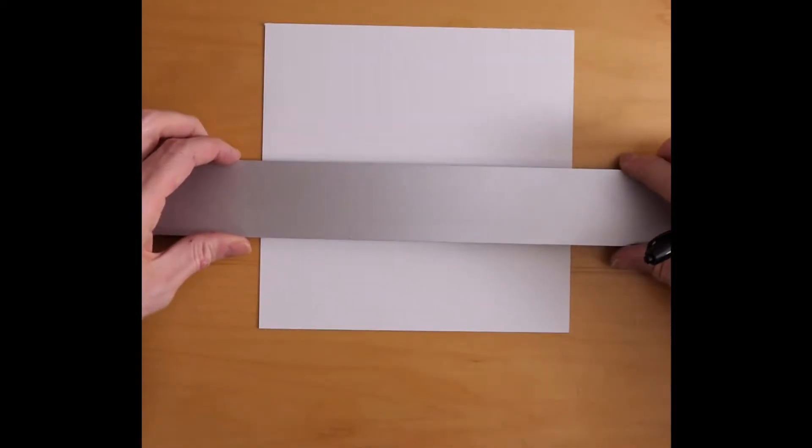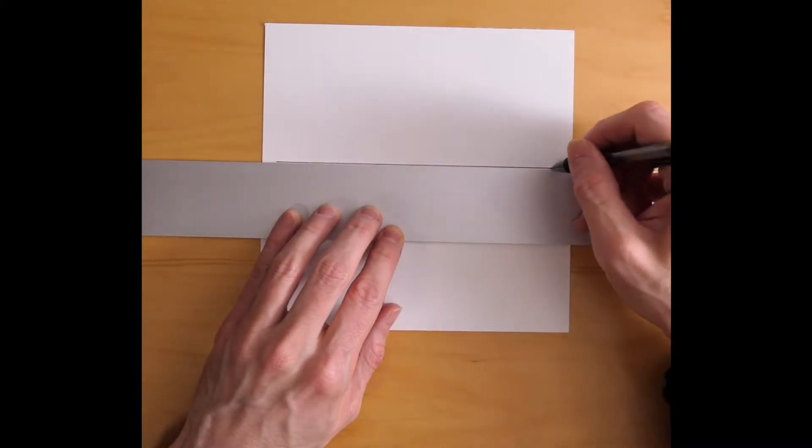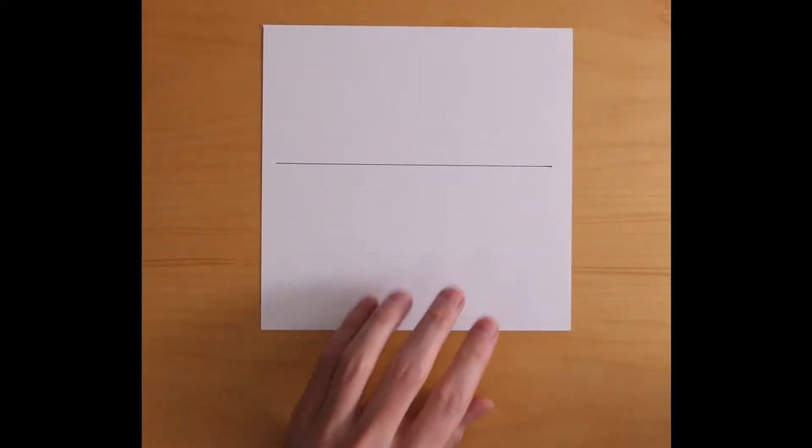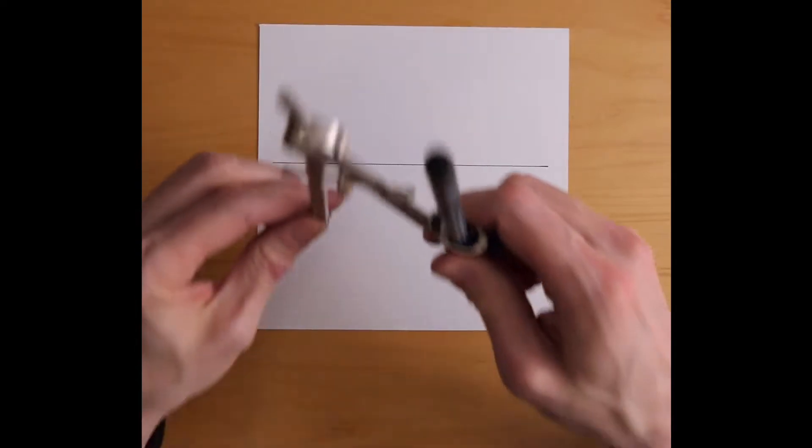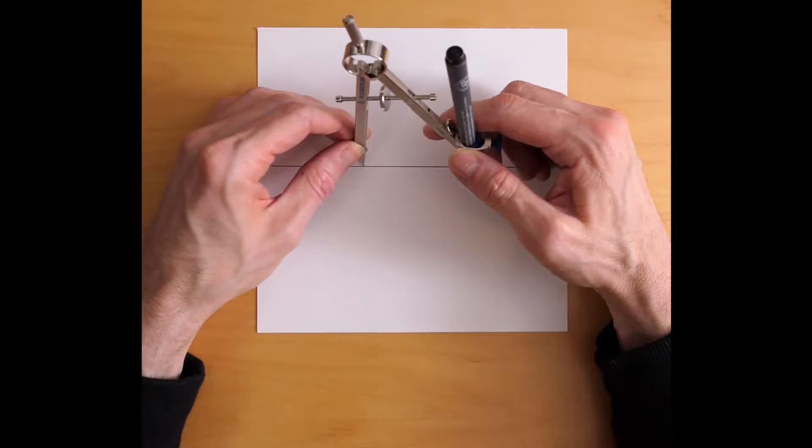Okay, let's construct a pentagon. We begin the way a lot of these constructions do. Draw a straight line horizontally across the page. And now I'm going to draw two semicircles that intersect and that's going to allow me to draw a vertical line that's attached to the horizontal line.